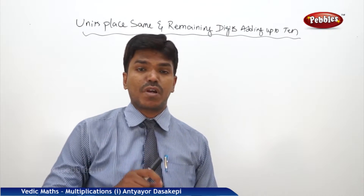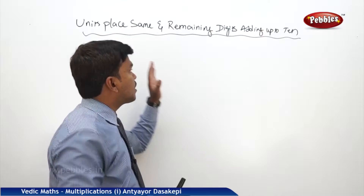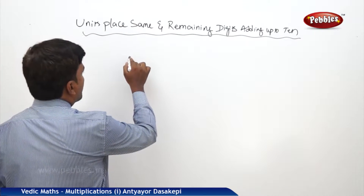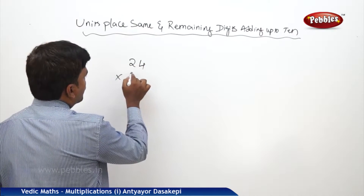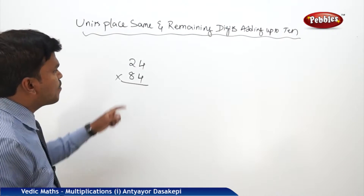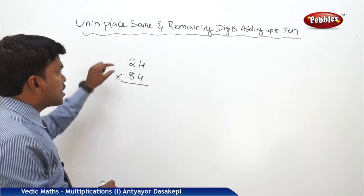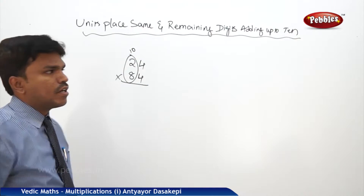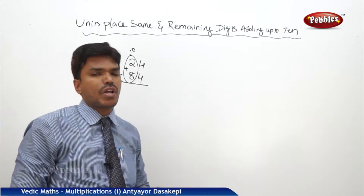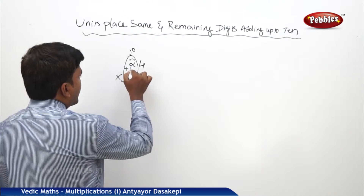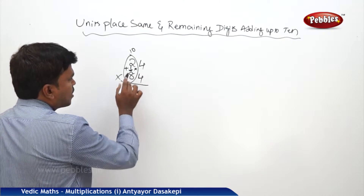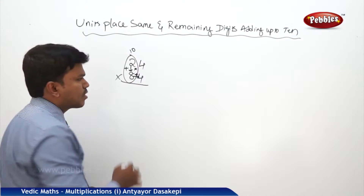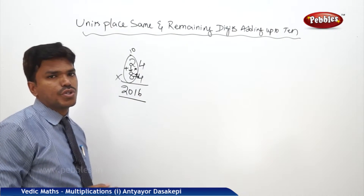We are going to learn a similar technique. This time, the units place is the same but the remaining digits add up to 10. For example, suppose I want to multiply 24 into 84. The units place is 4 and 4 — both same. The tens place: 2 and 8 add up to 10. So multiply 2 into 8 to get 16, then add the units digit: 16 plus 4 is 20. Then multiply 4 into 4: 16. So your answer is 2016.